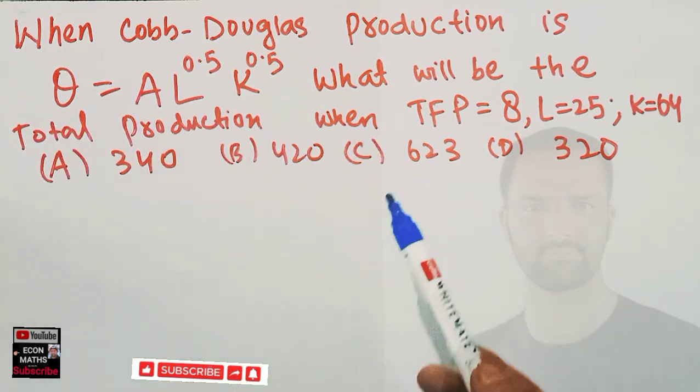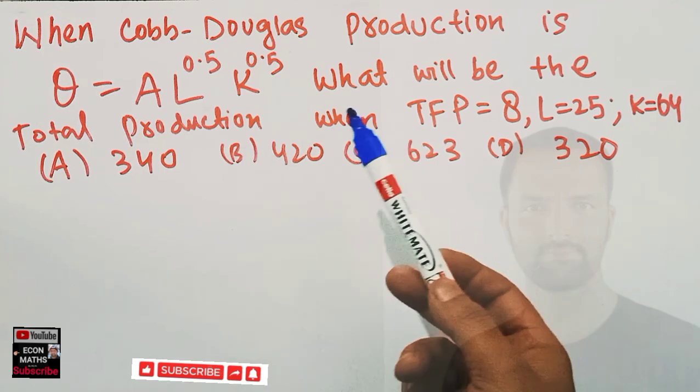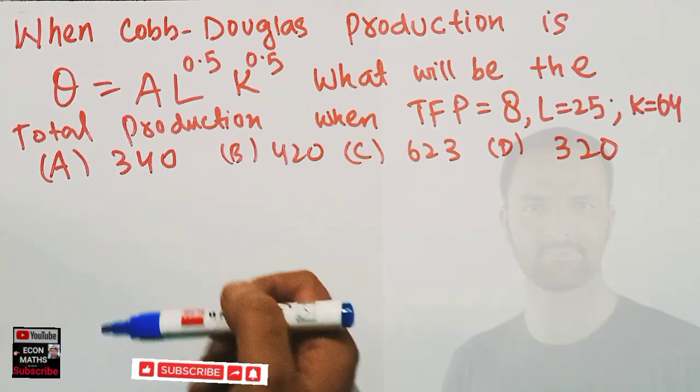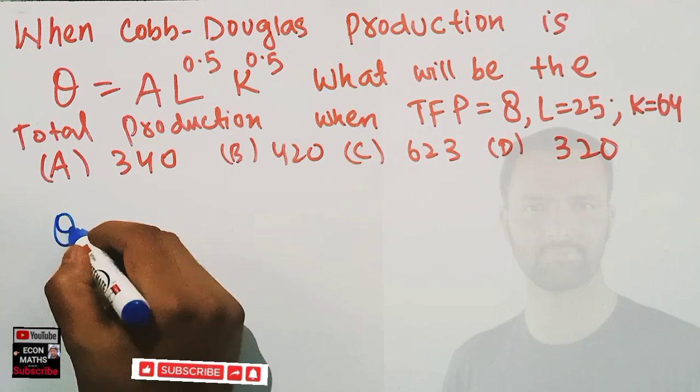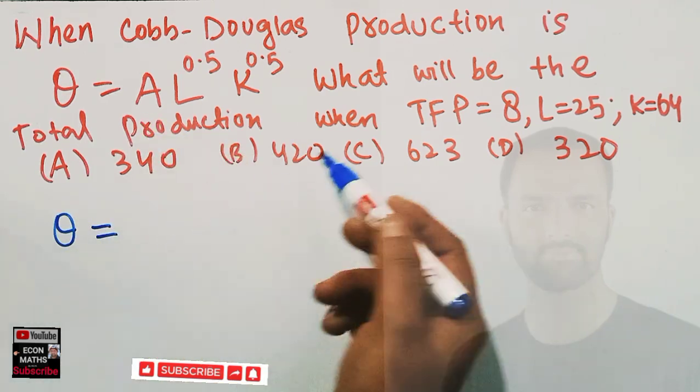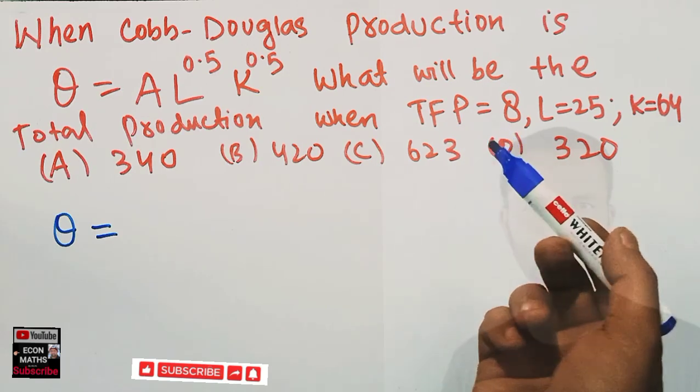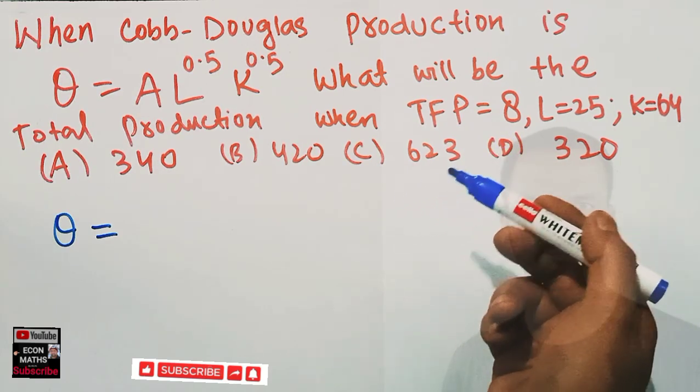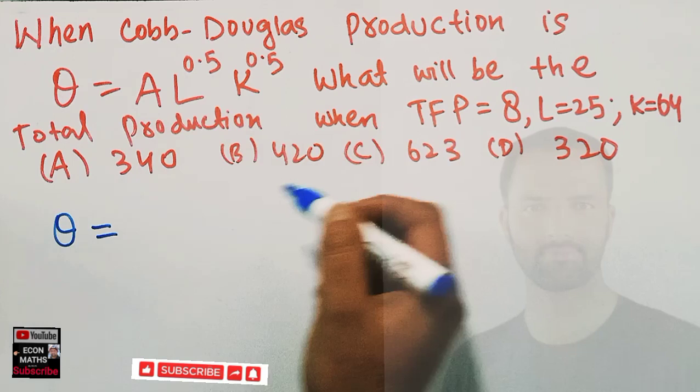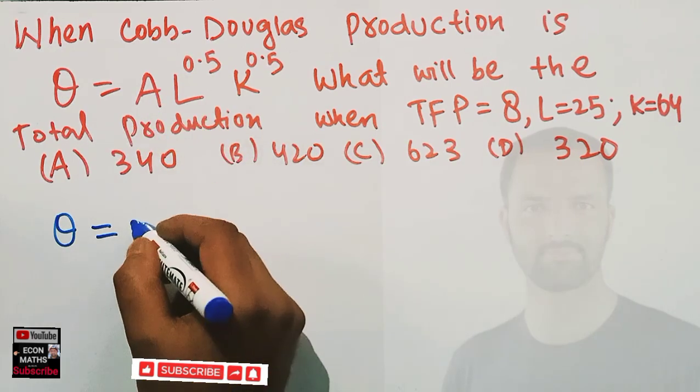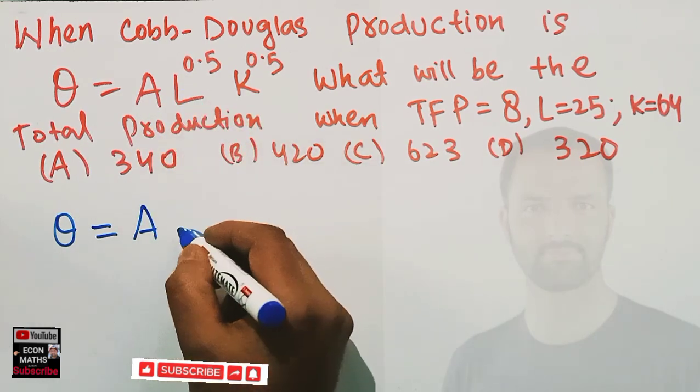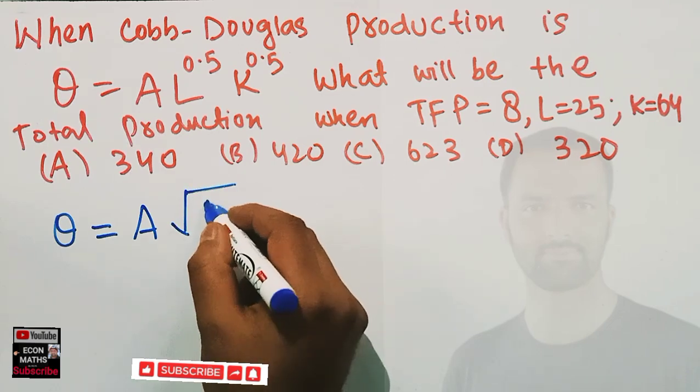We need to find the total production. Q equals A, the total factor productivity, also called the Solow residual, which equals 8. Let me write this: we have A times the square root of L, and